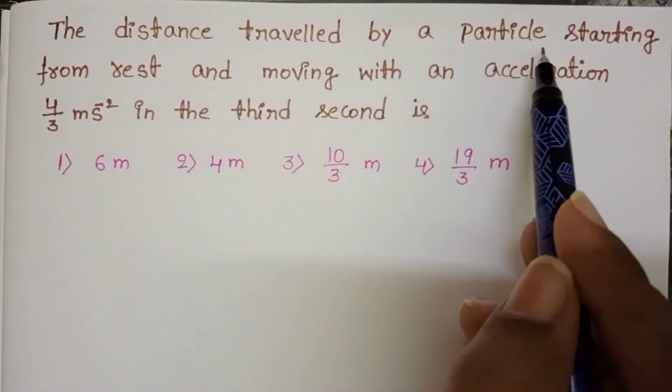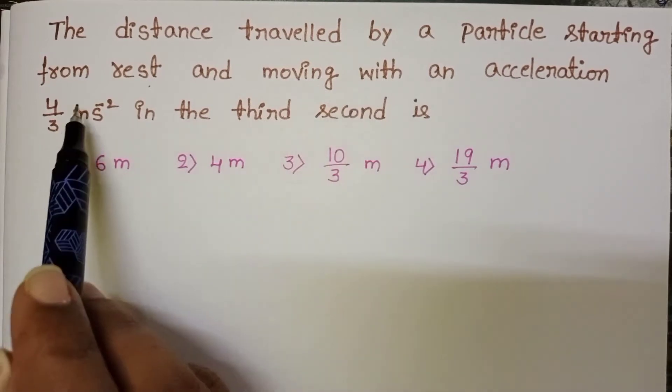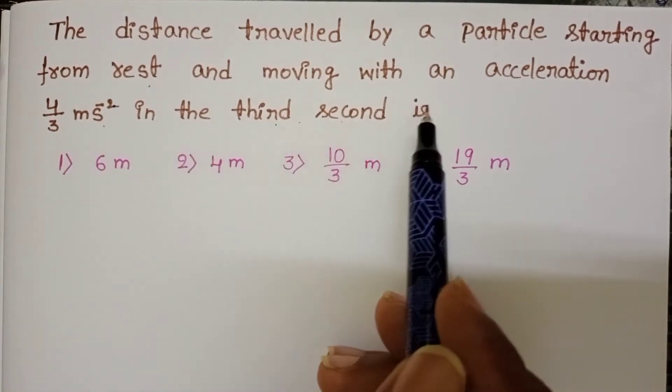The distance travelled by a particle starting from rest and moving with an acceleration of 4 by 3 meter per second square in the third second is: